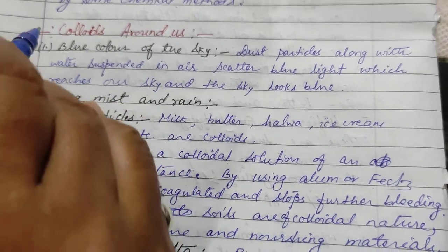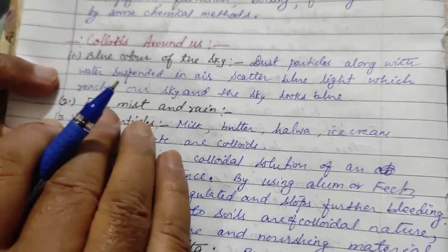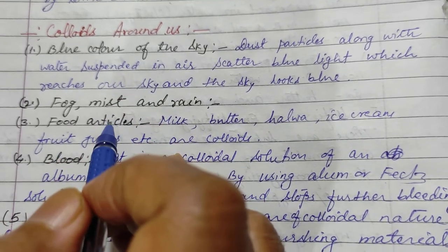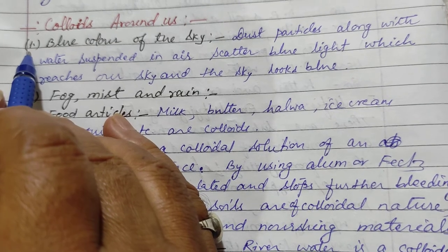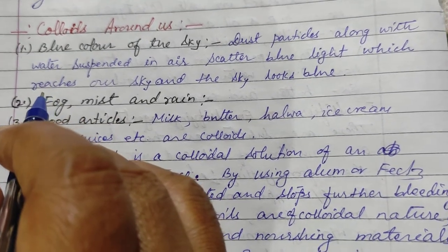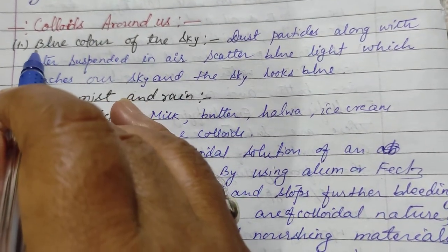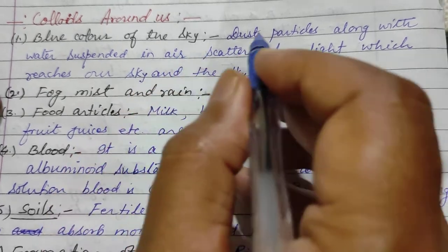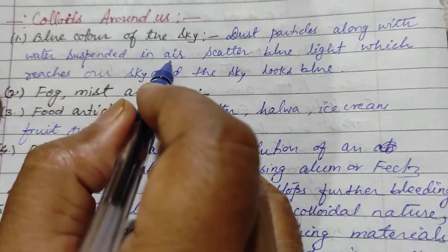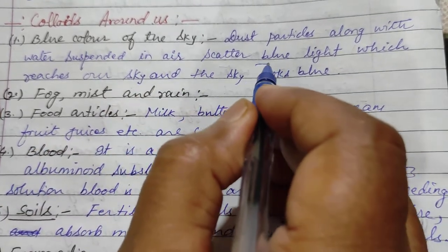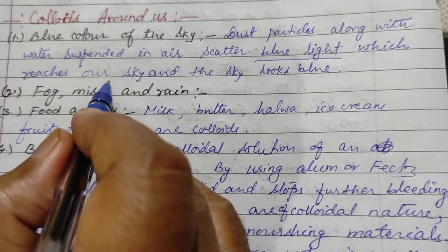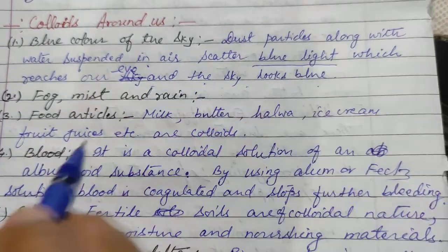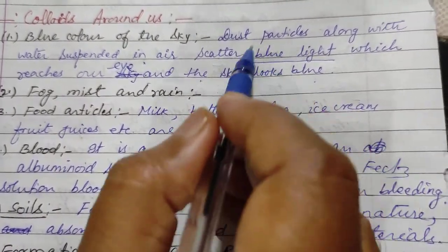This topic is very important and is included in your course, so be serious here. Now, colloids around us — where are colloids available? The first topic is the blue color of the sky. Dust particles along with water suspended in air scatter blue light, which reaches our eyes, and the sky looks blue. The reason is scattering of blue light only.